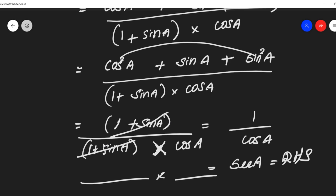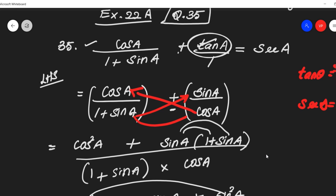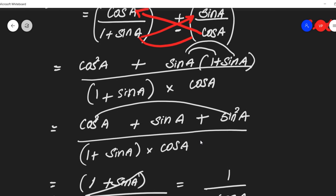We finished the problem in only 4 steps. To recap: the question is cos A by 1 plus sin A plus tan A. In place of tan A, write sin A by cos A and cross multiply. You get cos square plus sin square, which is the identity 1, and sin A into 1 plus sin A in the denominator. Adding gives sin square A, so by the Pythagorean identity we get 1 in the numerator.